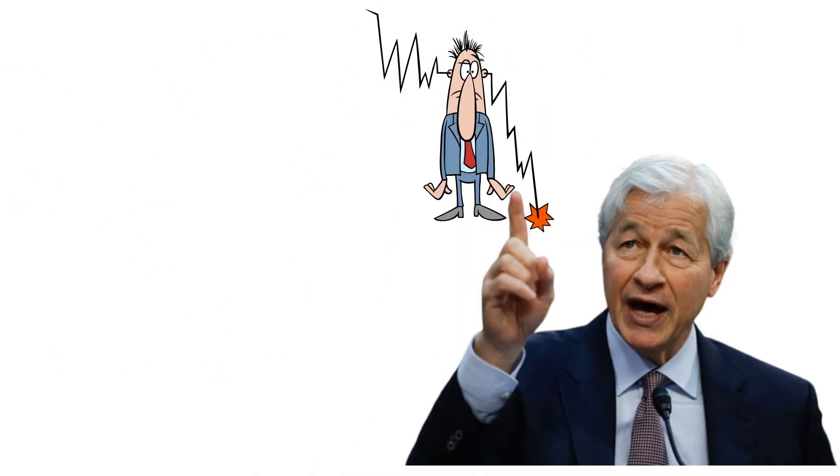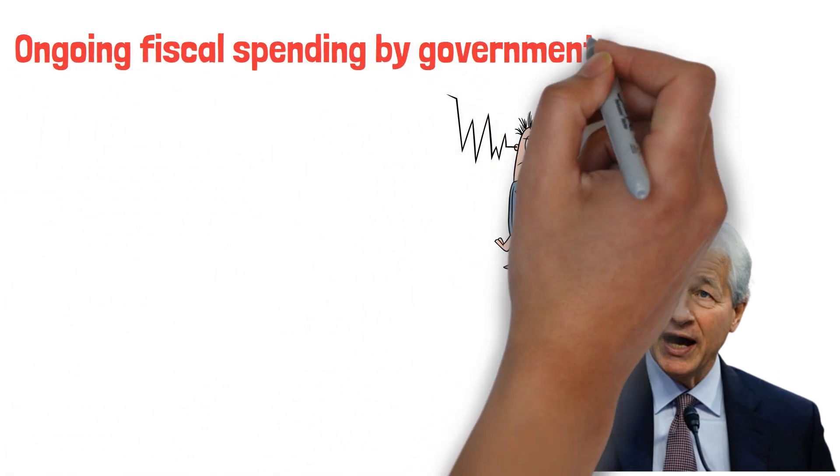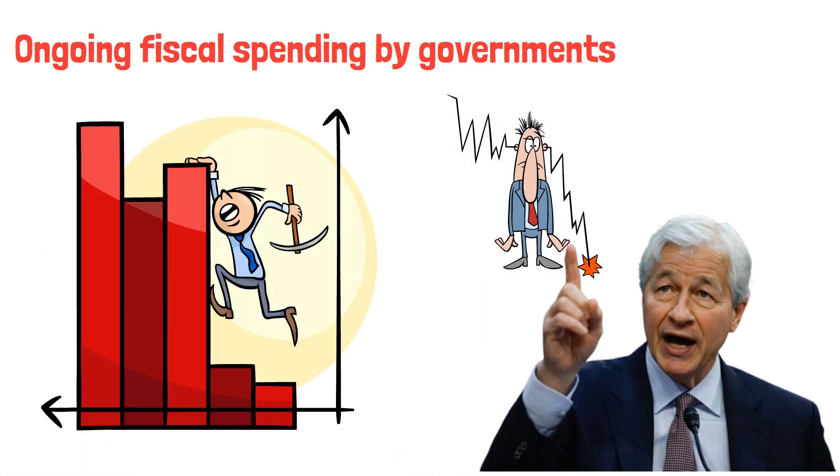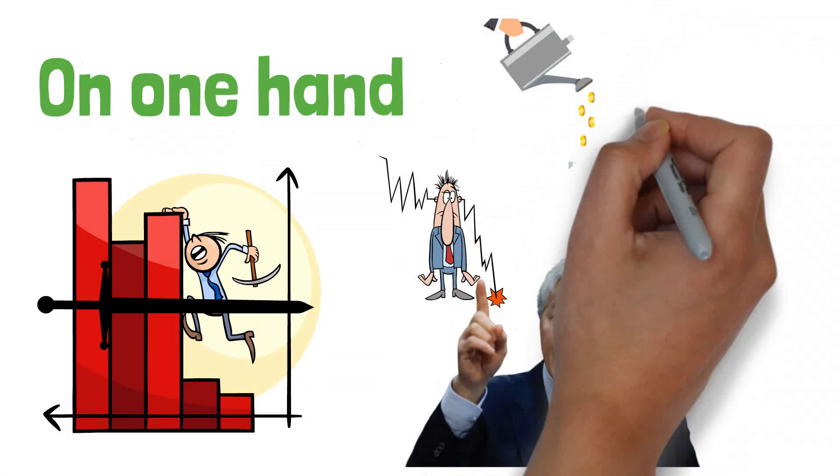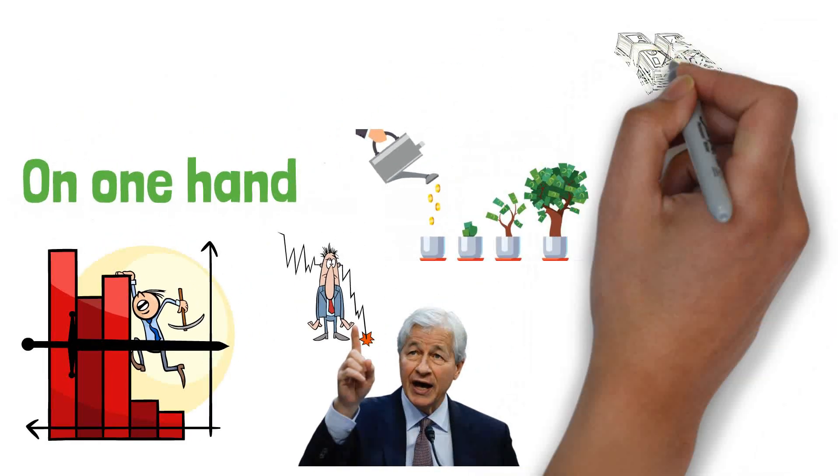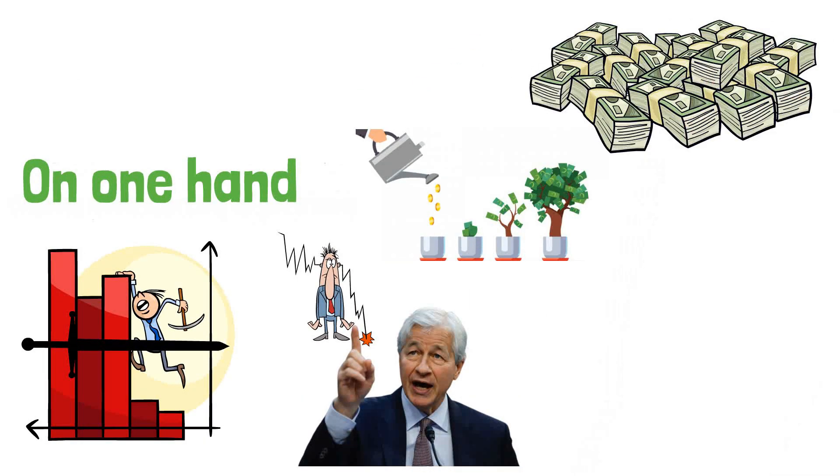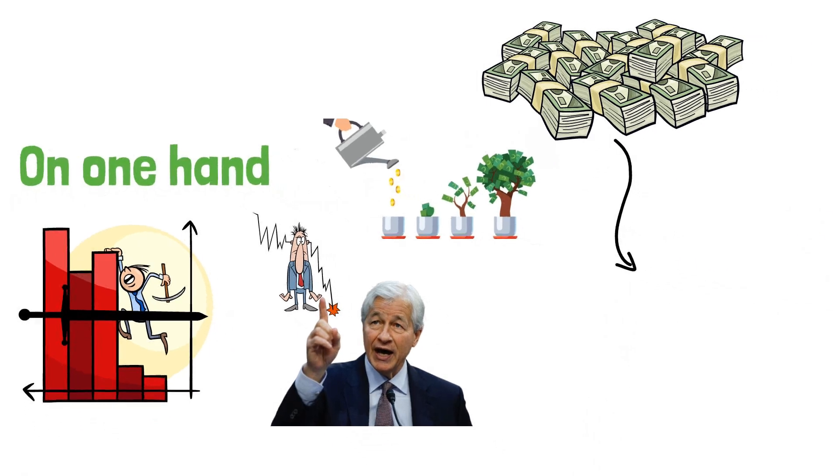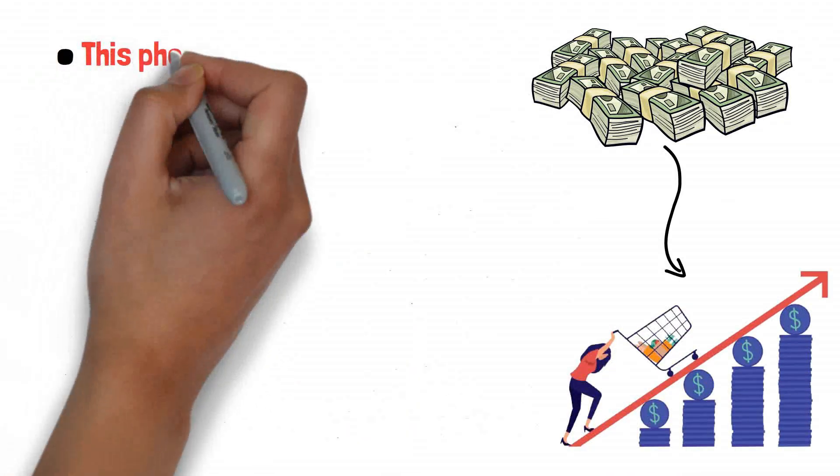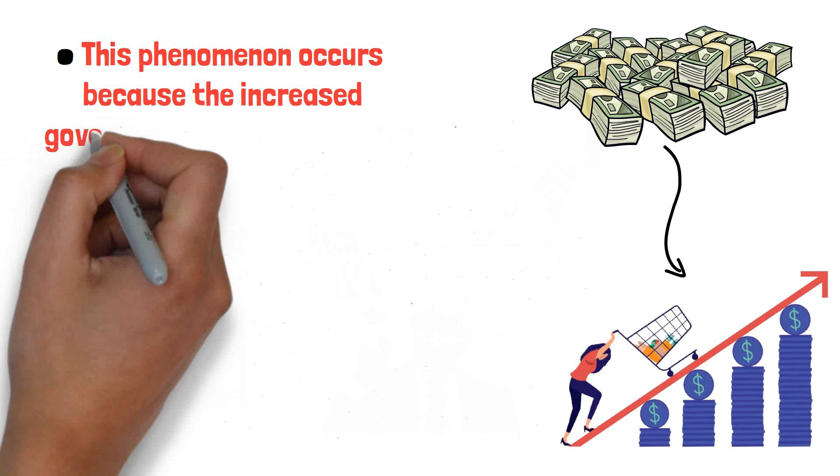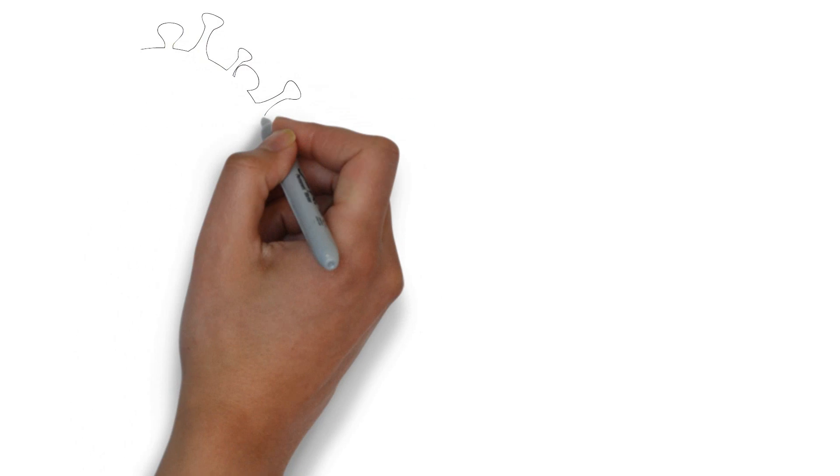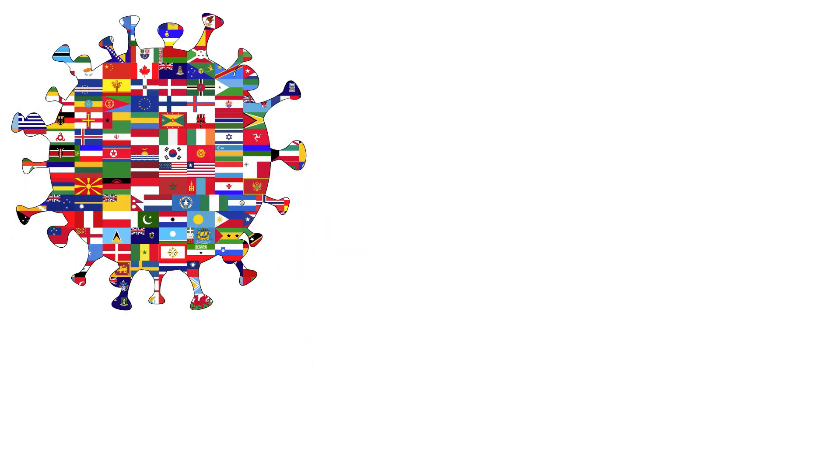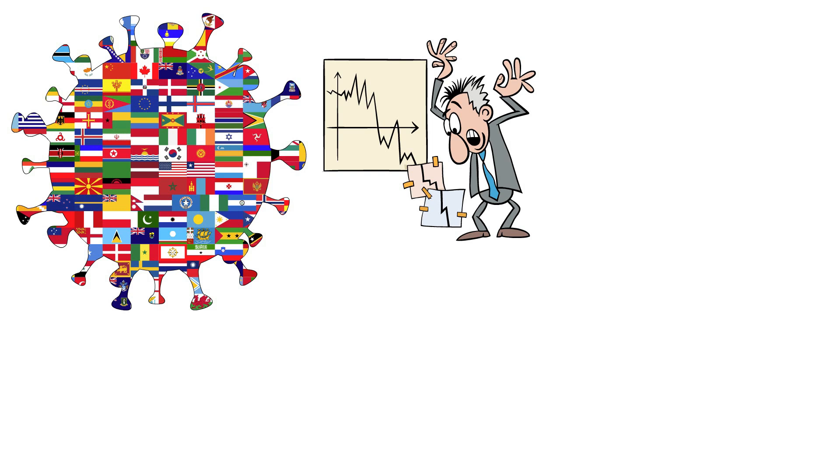Dimon's prediction is not just a casual statement, but a reflection of deep economic concerns. The ongoing fiscal spending by governments aimed at reviving economies from the pandemic's impact is a double-edged sword. On one hand, it has been essential to provide relief and stimulate growth. On the other hand, the sheer volume of fiscal stimulus has injected massive amounts of money into the economy, which can lead to inflation. This phenomenon occurs because the increased government spending raises demand for goods and services, driving up prices when supply cannot keep up.